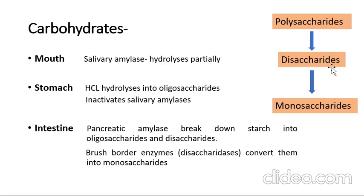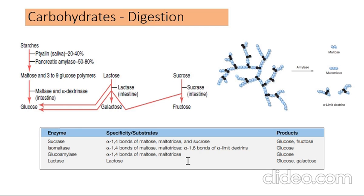Pancreatic juice does not have disaccharidases, but the brush border epithelium of the intestinal lumen has embedded disaccharidase enzymes. These brush border disaccharidases convert the disaccharides into monosaccharides. So ultimately, if you eat starch, it is broken down by salivary and pancreatic amylase into disaccharides, and disaccharides are further broken down into monosaccharides.